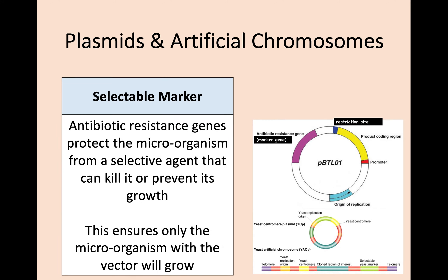Arguably the most important component is the selectable marker — an antibiotic resistance gene. Antibiotic resistance is used to protect the microorganism from any selective agent that would kill it or prevent its growth. This ensures that only the microorganism carrying that vector will grow, and also serves to test that the vector has been successfully taken in. If the microorganism has taken in the vector, it will have resistance to that antibiotic.